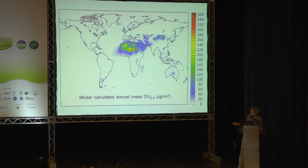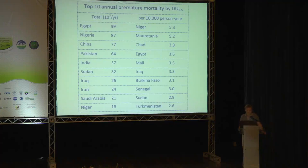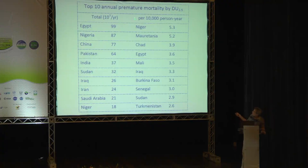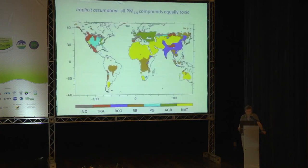Looking specifically at dust particles with aerodynamic diameter smaller than 2.5 micrometers over the Sahara — not many people live there. But in the top 10 premature mortality countries from dust, we find Egypt at almost 100,000 per year, Nigeria, China, Pakistan, India, and countries in the Middle East. On a per capita basis, Niger and countries in northern Africa top the list — unsurprisingly, given their proximity to the Sahara Desert.